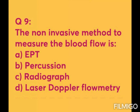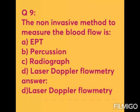Question 9: The non-invasive method to measure blood flow is — Option A: EPT (electric pulp test). Option B: percussion. Option C: radiograph. Option D: laser Doppler flowmetry. The answer is Option D — laser Doppler flowmetry. It is a non-invasive method of assessing and accurately measuring the rate of blood flow in tissue.